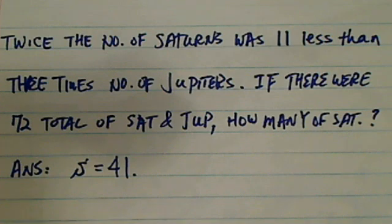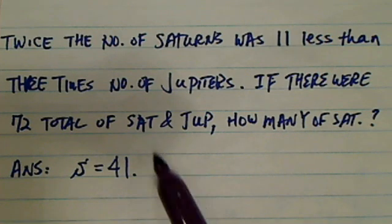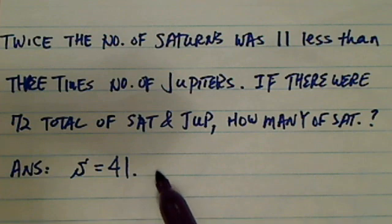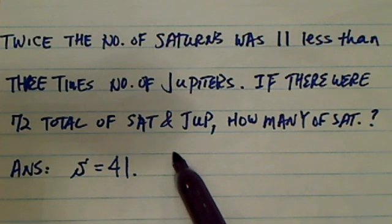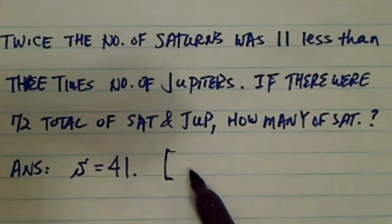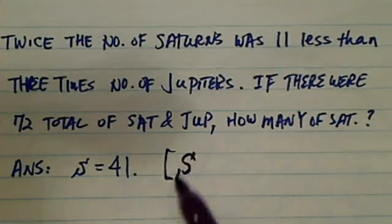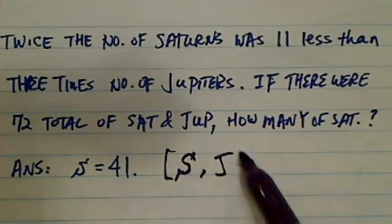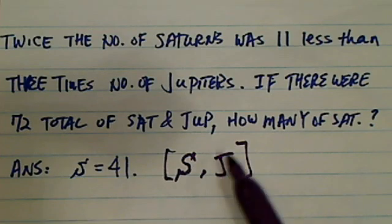This is a word problem. A lot of students have a headache with word problems. So what I want to do is go through a little bit of process and teach you how to do this one so it's no longer a problem for you. Let S be the number of Saturns and J be the number of Jupiters. It's pretty easy from there.